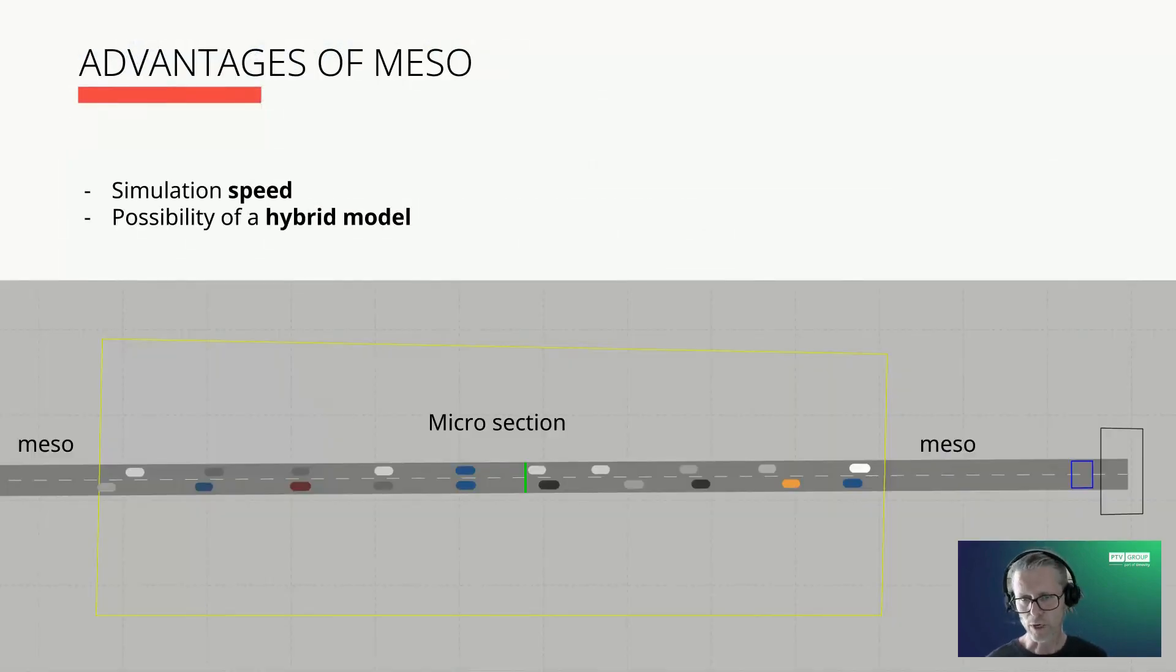I already mentioned one advantage of the meso model—it is the computation speed which allows you to handle large models. The second important one is the ability to run parts of the model at the microscopic level. You can define sections in the network and everything inside a section can be simulated microscopically, inclusive of the visualization.